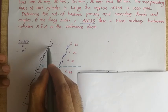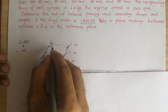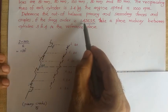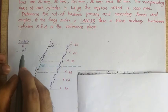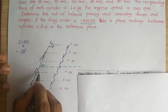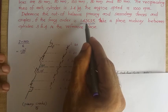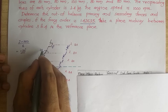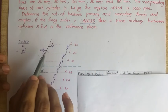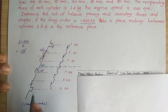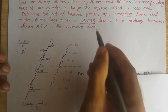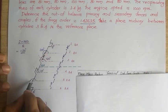The first crank is taken along the horizontal, so θ₁ = 0 degrees. The firing order is 1-4-2-6-3-5. The 4th cylinder is at 120 degrees. The 2nd cylinder is at 120 + 120 = 240 degrees. The 6th cylinder is at 240 + 120 = 360, which is 0 degrees. The 3rd cylinder is at 0 + 120 = 120 degrees, and the 5th cylinder is at 120 + 120 = 240 degrees.